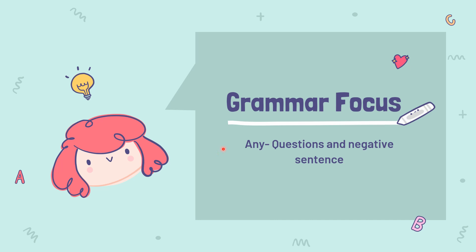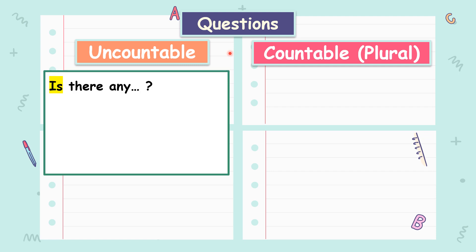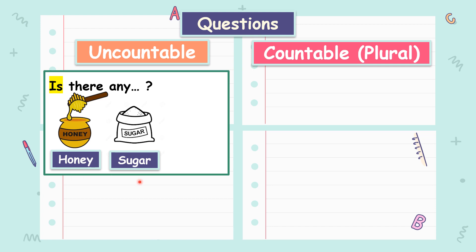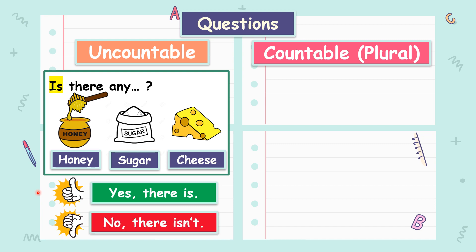Now we are going to focus on any. We use any when we ask questions or in a negative sentence. Negative sentence here means you don't have anything — zero, no item. We use any to ask questions. We still have uncountable and countable. When you see uncountable, we use is. When we see countable, we use are. For example, when you start asking a question with is: is there any honey? Is there any sugar? Or is there any cheese? If you have any of these items, we say yes, there is. And if you don't have any, we say no, there isn't.